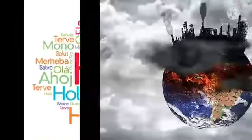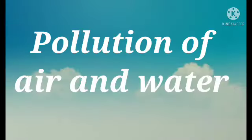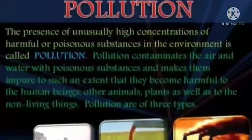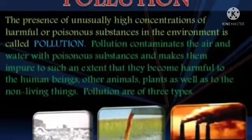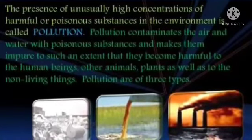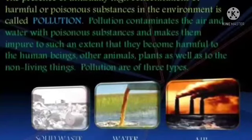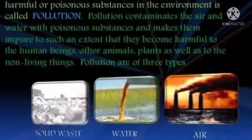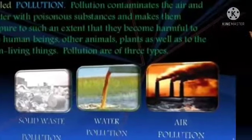The introduction of harmful materials into the environment is called pollution. Today we shall learn about pollution of air and water. The presence of unusually high concentrations of harmful or poisonous substances in the environment is called pollution. It contaminates air and water, making them harmful to human beings, other animals, plants, and non-living things. Pollution is of three types: solid waste pollution, water pollution, and air pollution.